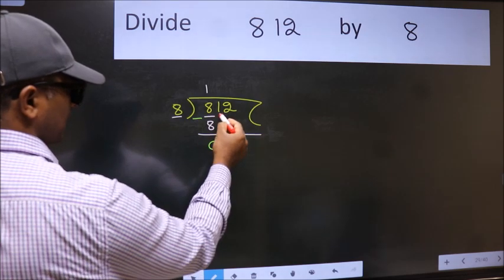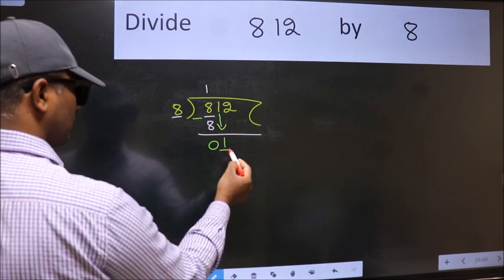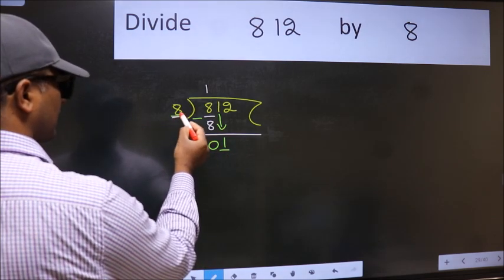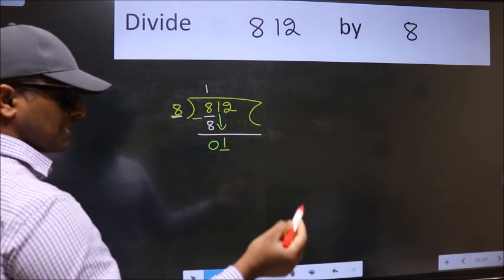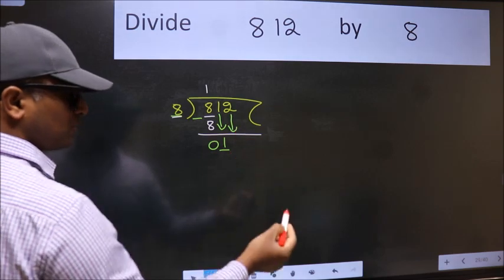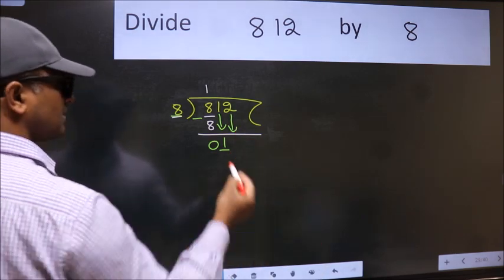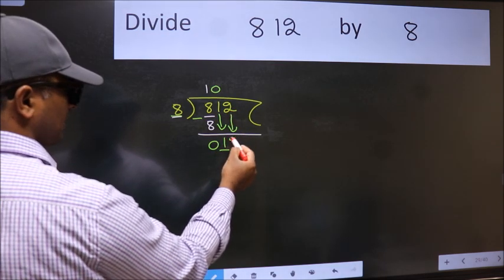After this, bring down the beside number. So 1 down. Now here we have 1 and here 8. 1 is smaller than 8. So we should bring down the second number. And the rule to bring down second number is put 0 here. Then only we can bring this number down.